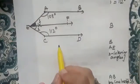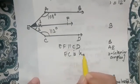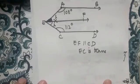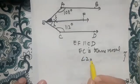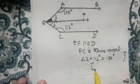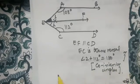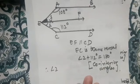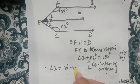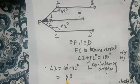Now consider EF parallel to CD with EC as transversal. Angle 2 plus 112 degrees equals 180 degrees, because they form co-interior angles and co-interior angles are supplementary. Therefore, angle 2 equals 180 minus 112, which gives us angle 2 as 68 degrees.